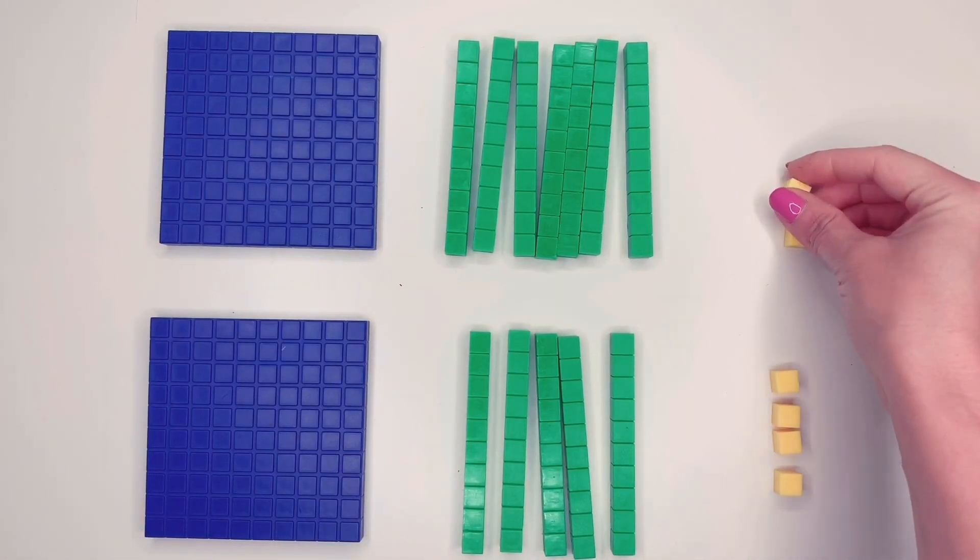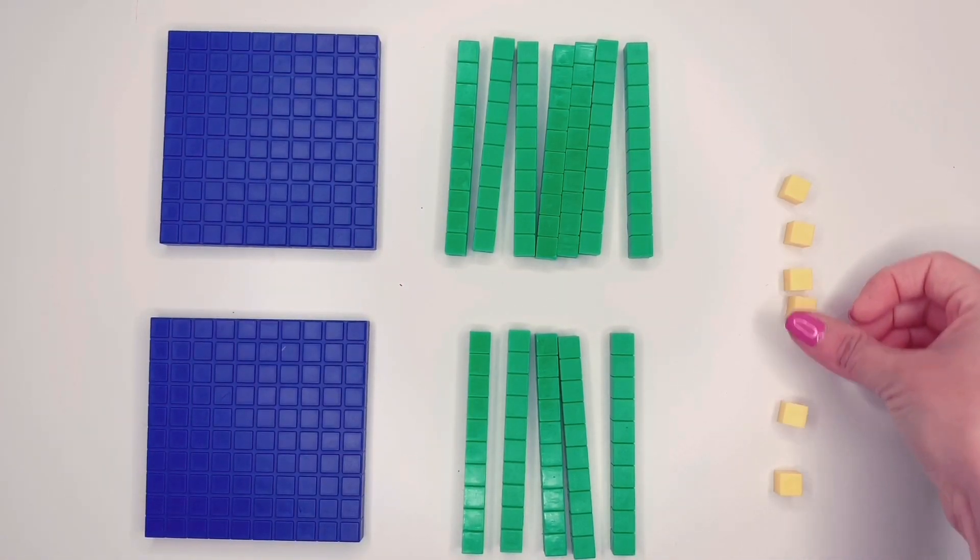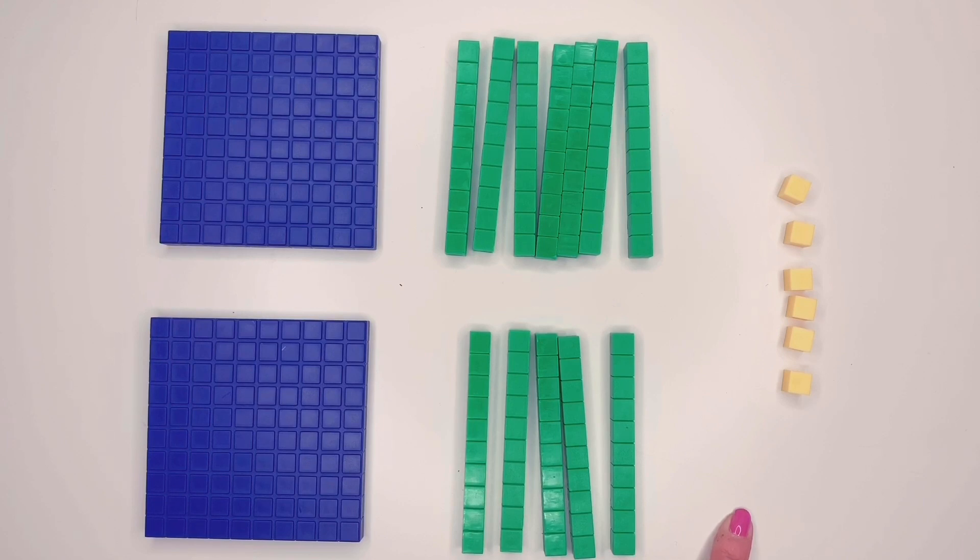So here we have two, three, four, five, six. Okay we don't need to regroup that because that's less than nine. So less than nine stays here. We don't have to regroup. Nine or less, let it rest. Nine or more, go next door to regroup.